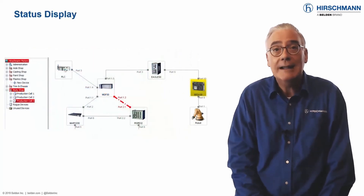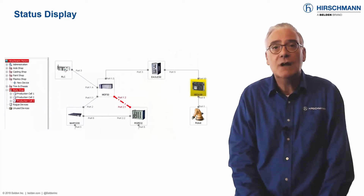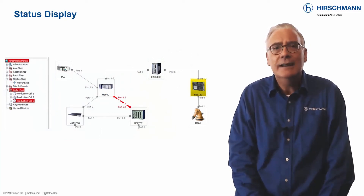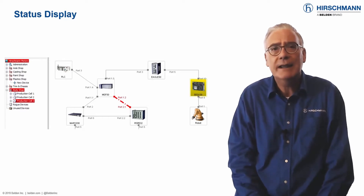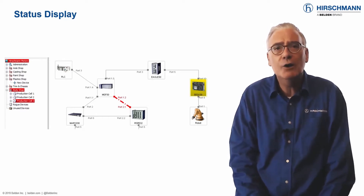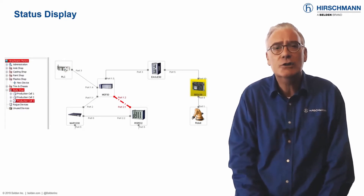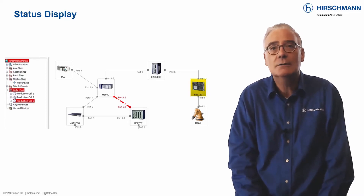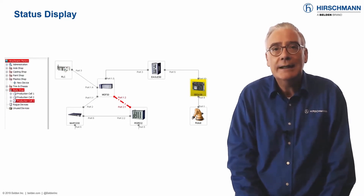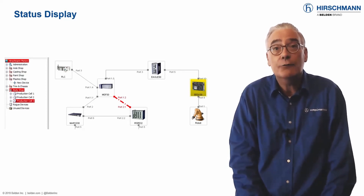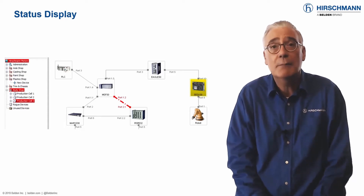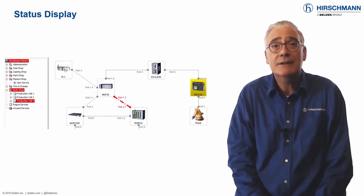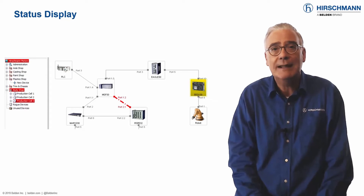Many IT network management applications are heavily text-based. If the application supports a topology map, it is often only used to show the location of physical connections. Industrial HiVision stands out from the crowd by offering attractive topology maps featuring extensive displays.